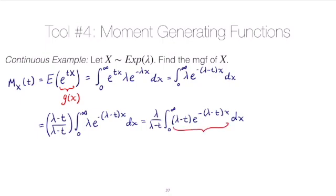This here is the pdf of exponential with rate parameter lambda minus t, and what that means is that this whole integral is equal to one, which is really nice because then we're just left with lambda over lambda minus t, and that's our moment generating function.